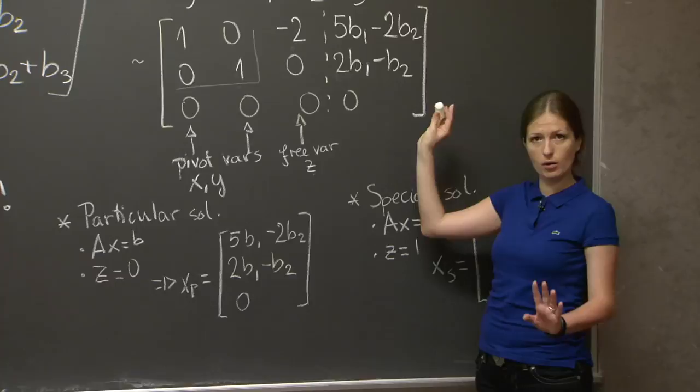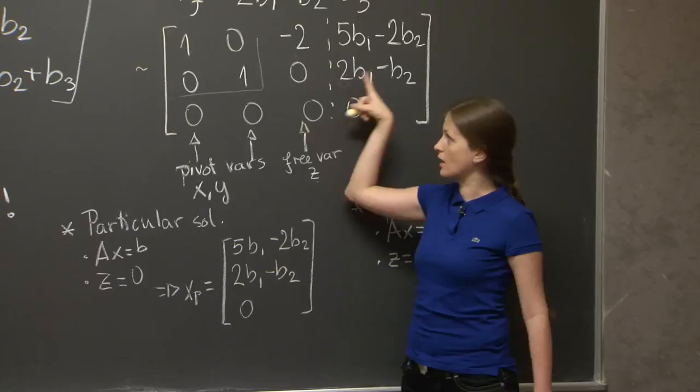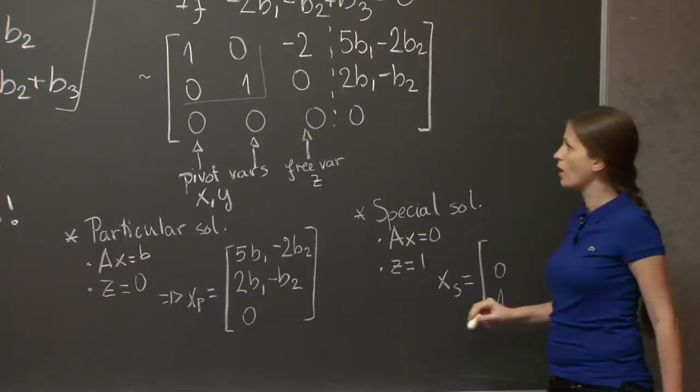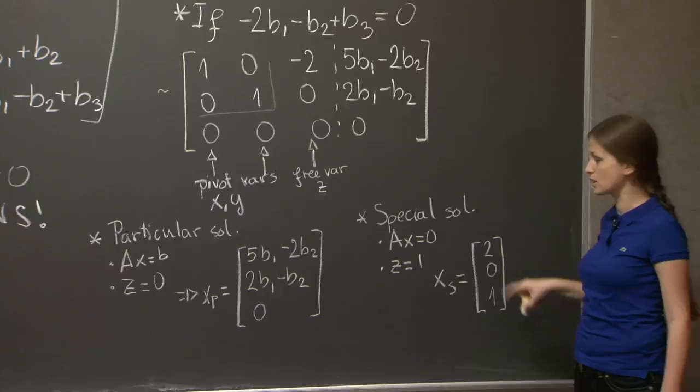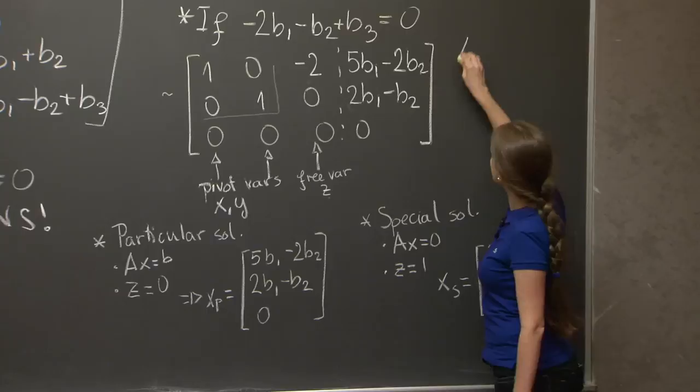The solution that we get in this case, and remember we're solving Ax equals 0. We don't care about the right-hand side anymore. So z is 1. This second equation says y equals 0. And the first equation says x minus 2 times 1 equals 0. In other words, x equals 2. So the special solution is 2, 0, 1.